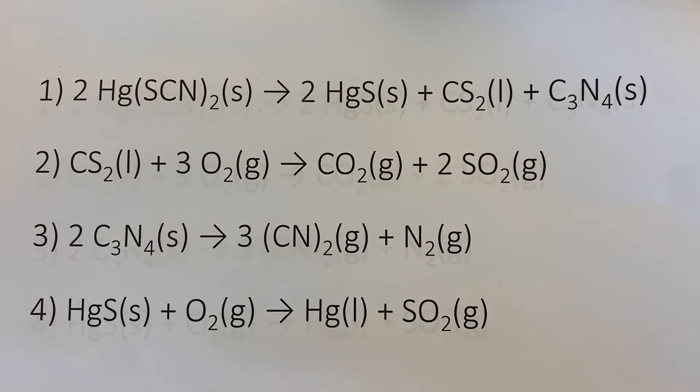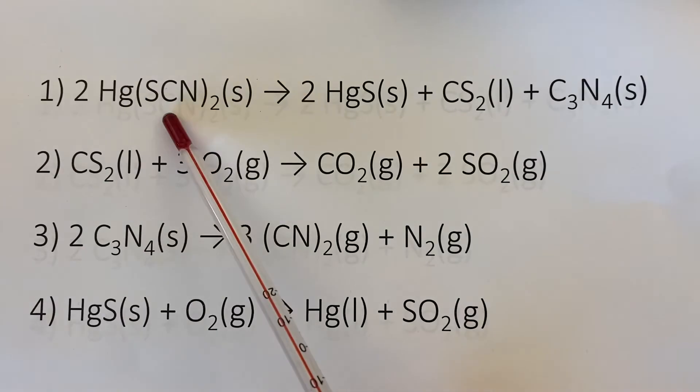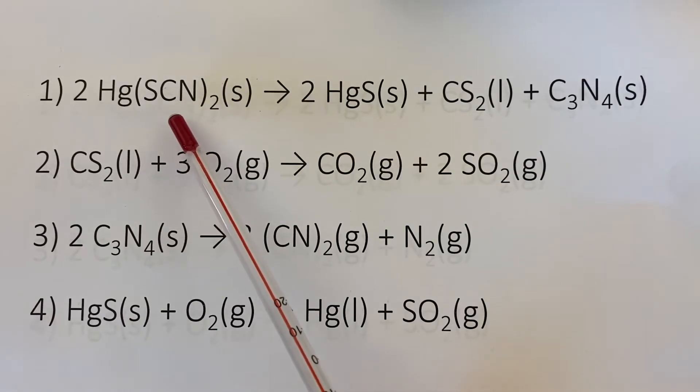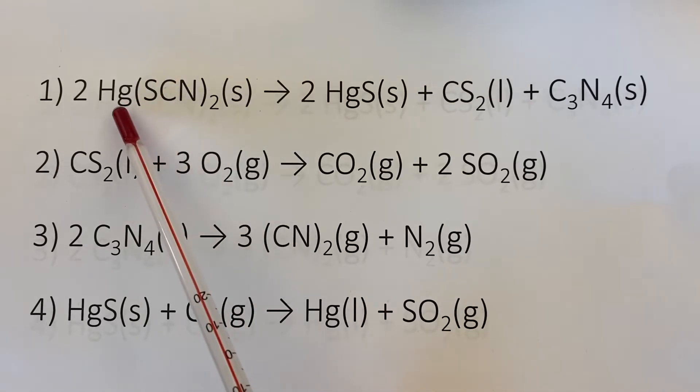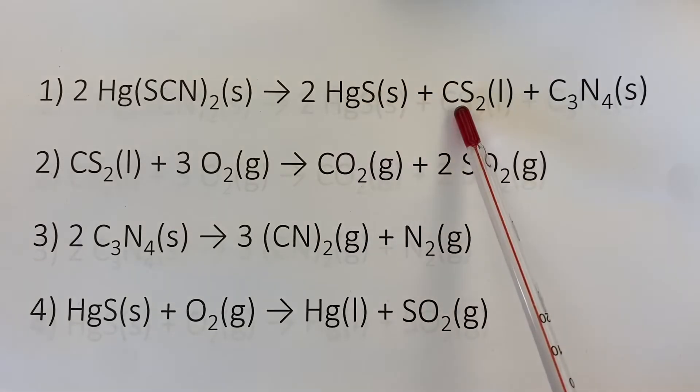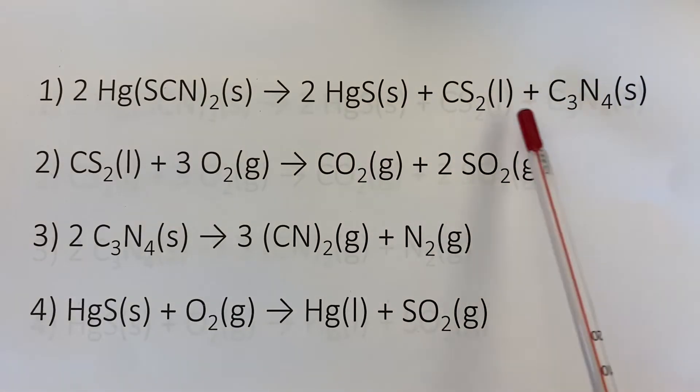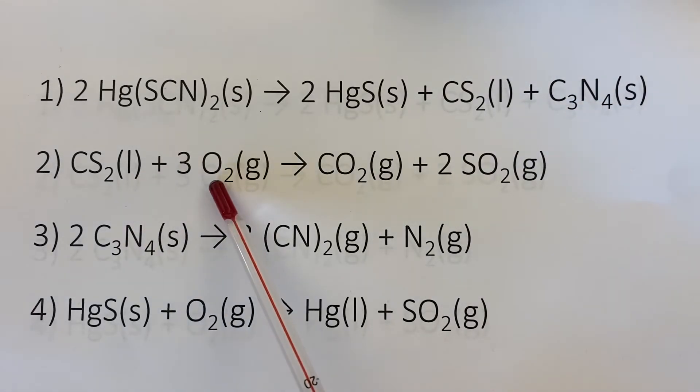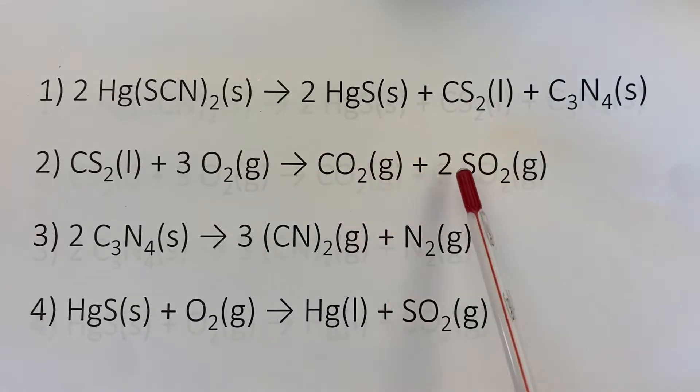So that you don't lose sleep at night wondering how this reaction happens, let's take a look at the reactions. There's a series of reactions that are either decomposition or combustion, starting with this decomposition reaction of the mercury thiocyanate which breaks down into mercury sulfide, carbon disulfide, and carbon nitride. These last two undergo further reactions. The carbon disulfide reacts with some oxygen from the air to produce carbon dioxide and sulfur dioxide gas.